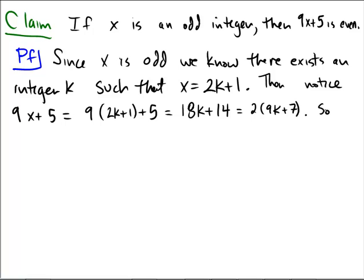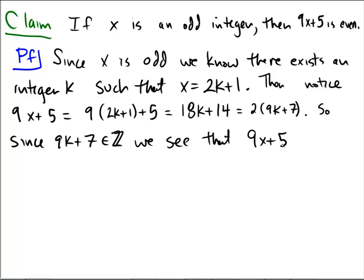So therefore, since 9k plus 7 is also an integer, we see that 9x plus 5 being 2 times an integer must be even. And this concludes our proof.